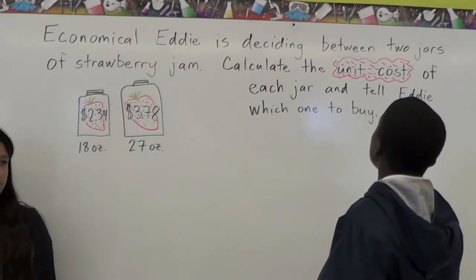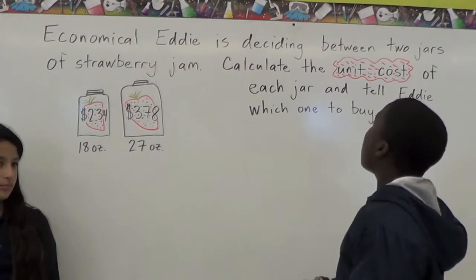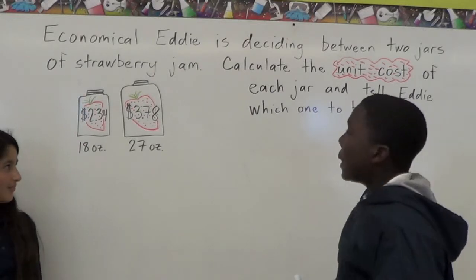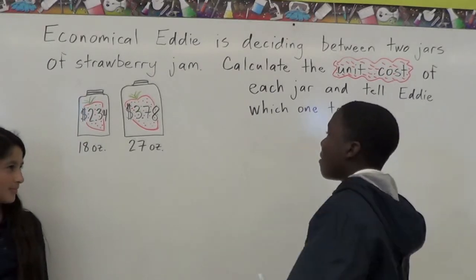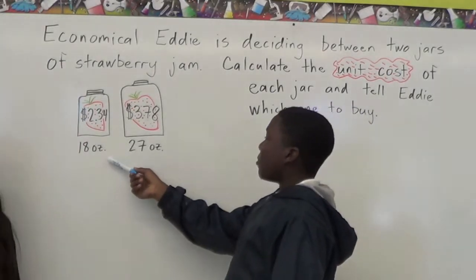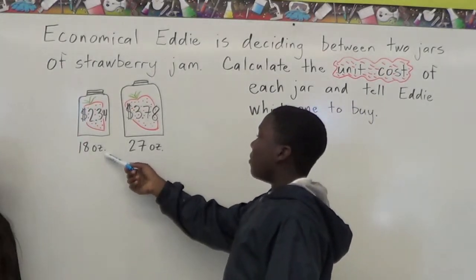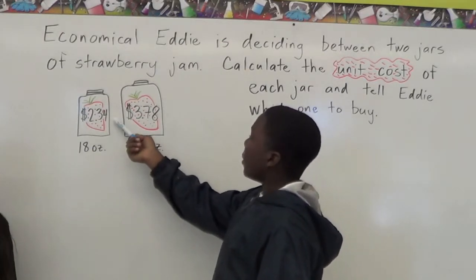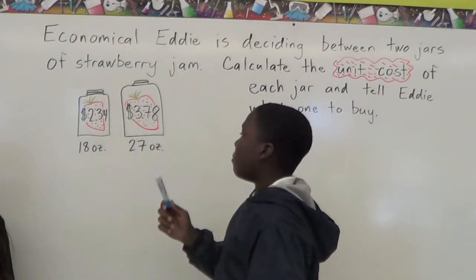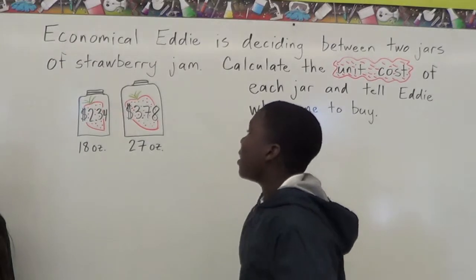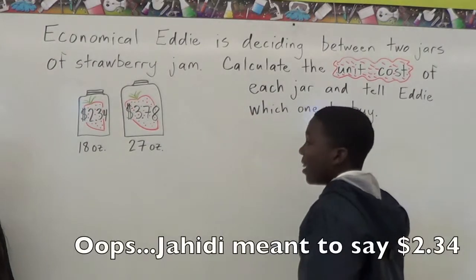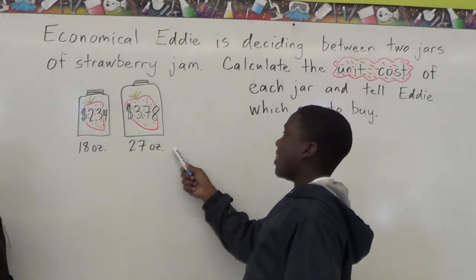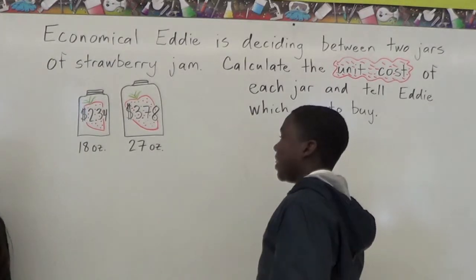Calculate the unit cost of each jar and tell Eddie which one to buy. We have an 18-ounce jar of strawberry jam that costs $3.34, and we have a 27-ounce jar that costs $3.78.